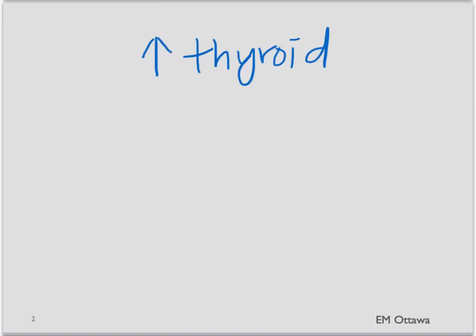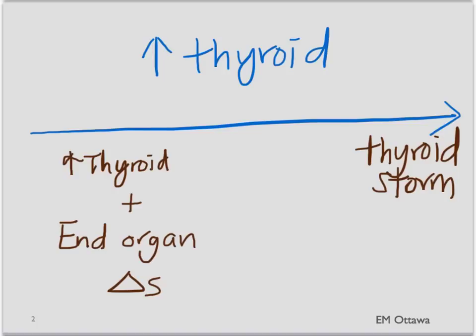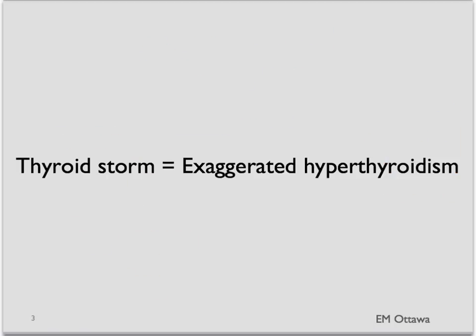What is thyroid storm? Thyroid storm is a form of hyperthyroidism where there is too much thyroid hormone. It sits at the extreme end of hyperthyroidism. It is defined as hyperthyroidism with end organ dysfunction, particularly with cardiac and neurological effects. Patients with thyroid storm, therefore, have exaggerated clinical features of hyperthyroidism.